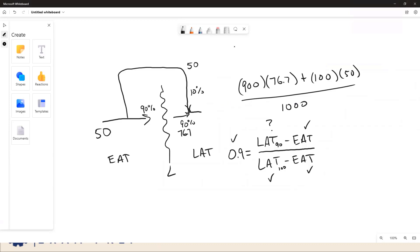So when you mix it all back together, it comes back out at the 76.7. Well, the 900 gets to 76.7, but the remaining 10%, the last hundred CFM doesn't get heated at all because it bypassed. And then you have to mix those two streams.